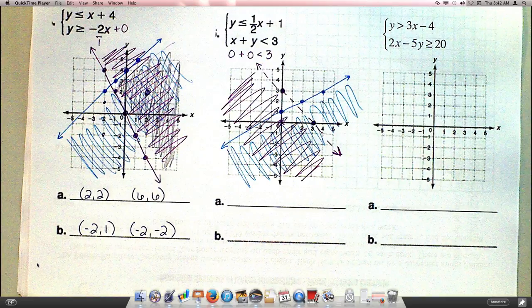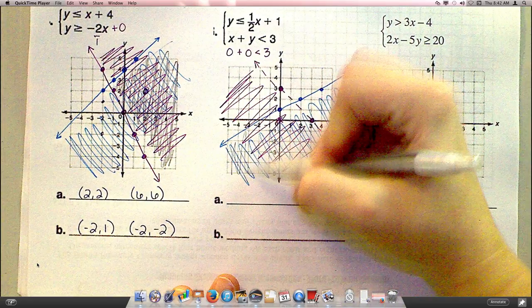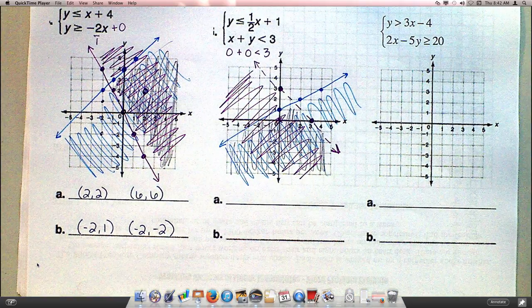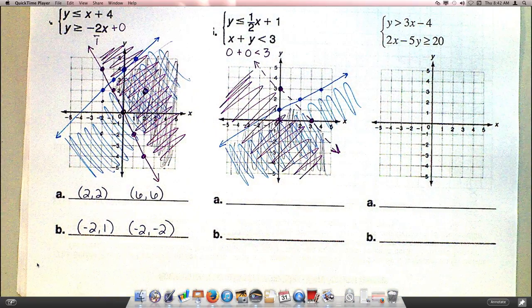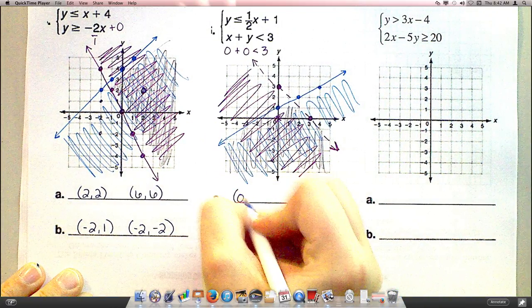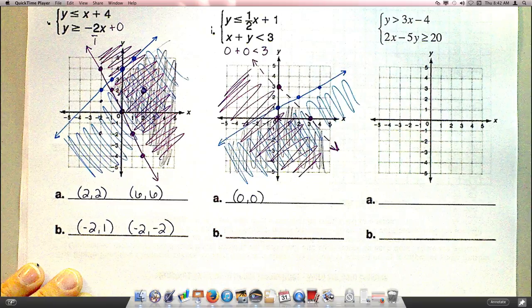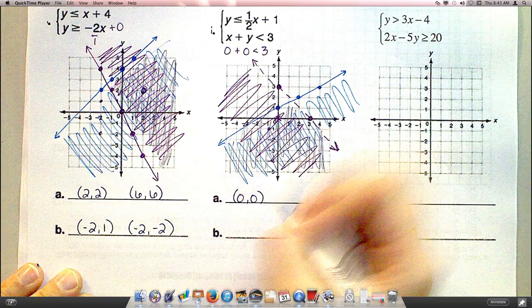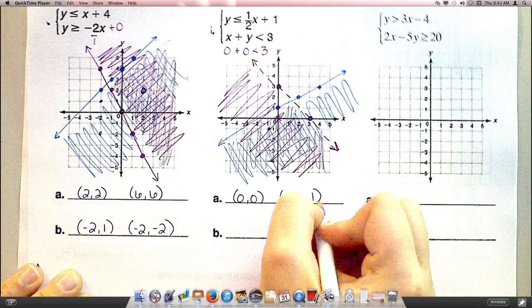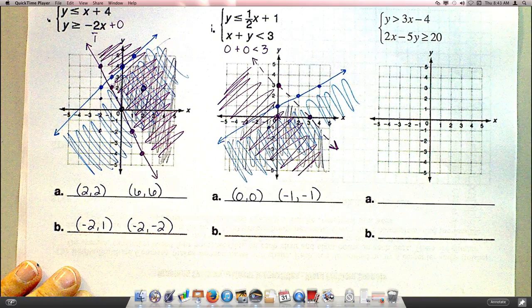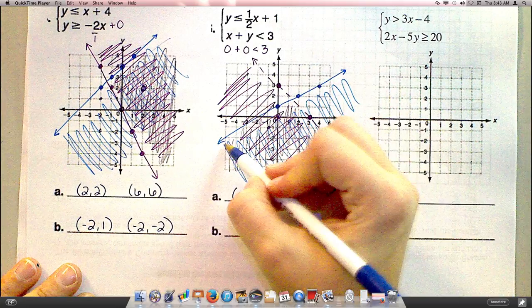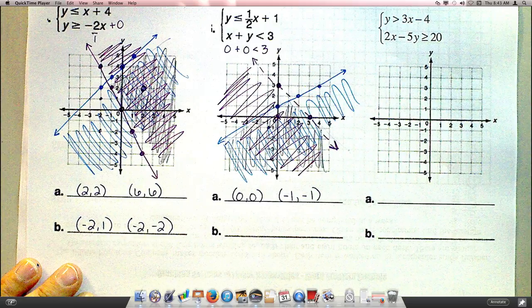And that means my overlap area is this bottom section. All of this. 0, 0 is in that section. Yep. So that's one of our solutions. Negative 1, negative 1, right here. Also in the solution. Let's let somebody else name something that's not a solution. Anything that's not in this V down here. Negative 3, 2, 3. 3 and 2 is up here.